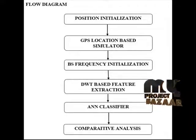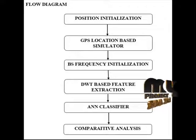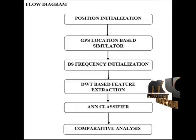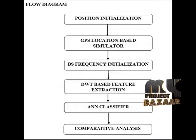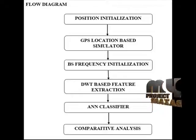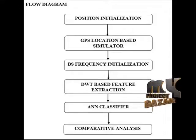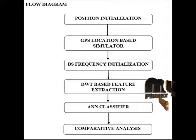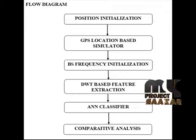Using the ANN classifier, proper tuning is adapted to get the estimation of positional errors and the fixed position of the vehicle, because the vehicle is moving in a random direction. The identification of vehicle movement in a particular direction is captured using this process. The comparative analysis shows the performance of GPS and GNSS-based location simulator and signal-based simulator. Overall, the GNSS-based system performed more effectively for signal-based estimation.